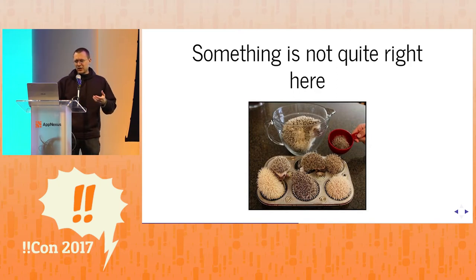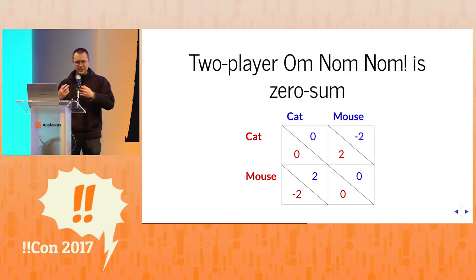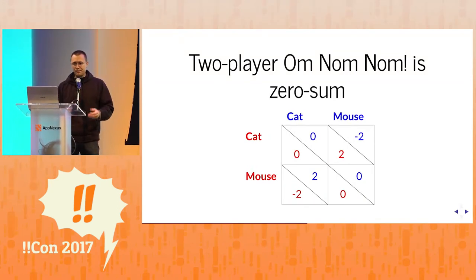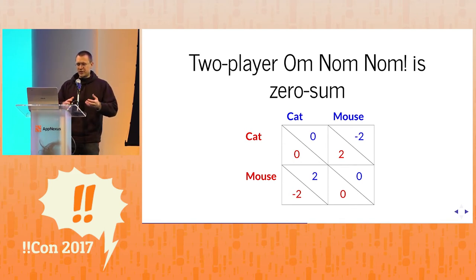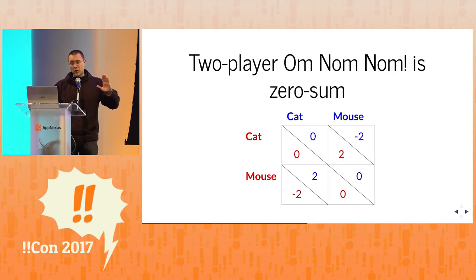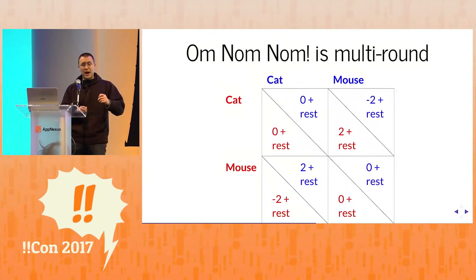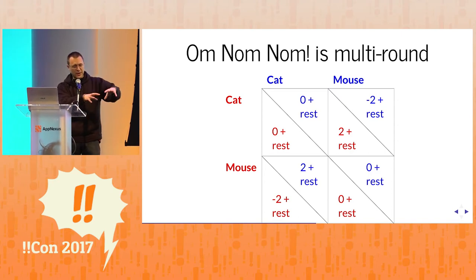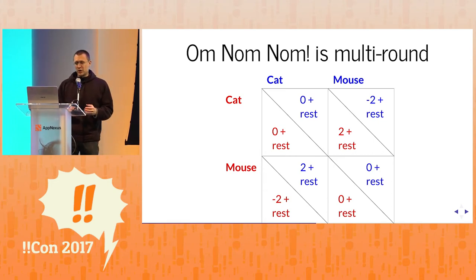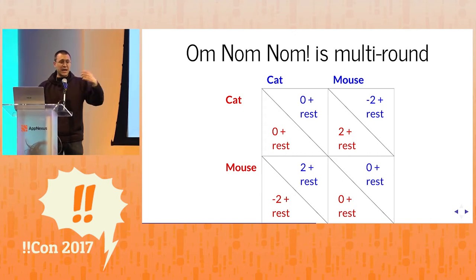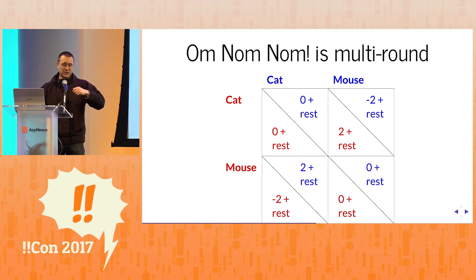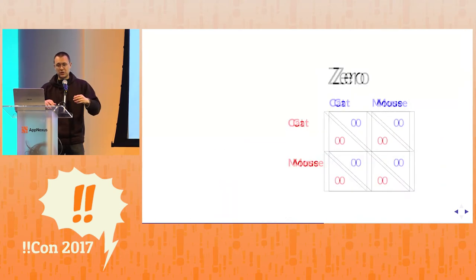Something is not quite right here. In a two-player OmNomNom, any point you get is a point I didn't get — my goal is to beat you, so this is actually a zero-sum game. But something is still not quite right because OmNomNom is multi-round. After you've played your first card, you evaluate it, put it aside, then play the next card until you're out of cards. Your actual score is whatever it is for this round plus the rest of the game. If my cat eats your mouse this turn, then I've only got a mouse left and you've only got a cat left — and your cat's going to eat my mouse, so net zero.